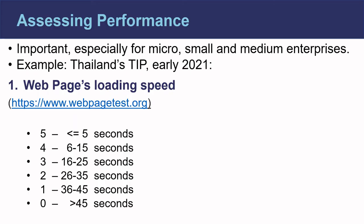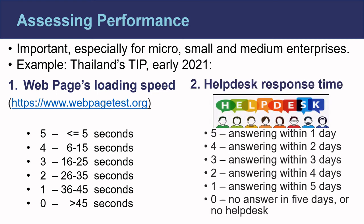Or another example: the performance of a help desk where traders can submit questions to the TIP management can be measured by how many days it takes to respond. A 5 might be given if an answer comes in 1 day, 4 if it takes 2 days, and so on, up to a 0 if there is no help desk or answers take longer than 5 days. As mentioned before, the relevance and quality of the answers may also need to be separately considered.